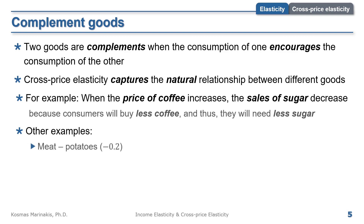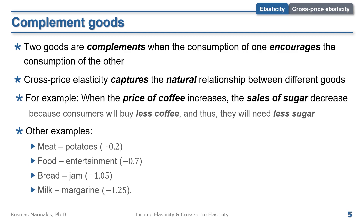Here are some examples of complements. The cross-price elasticity of meat and potatoes is minus 0.2, because meat goes well with potatoes. Food and entertainment is minus 0.7, as people like to eat when they are entertained. Bread and jam is minus 1.05, because people eat them together. Research also shows milk and margarine have a cross-price elasticity of minus 1.25 — a strong indication they are complements, though the relationship isn't entirely intuitive. Sometimes the numbers reveal relationships that our intuition has not yet figured out.